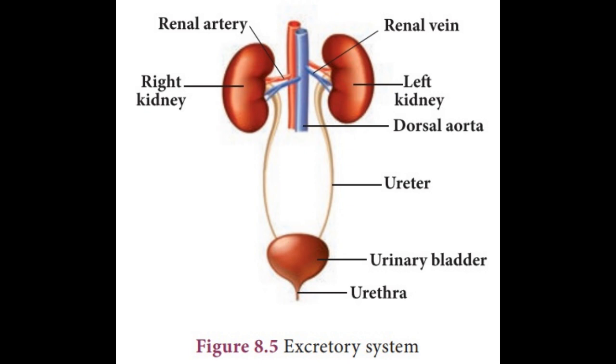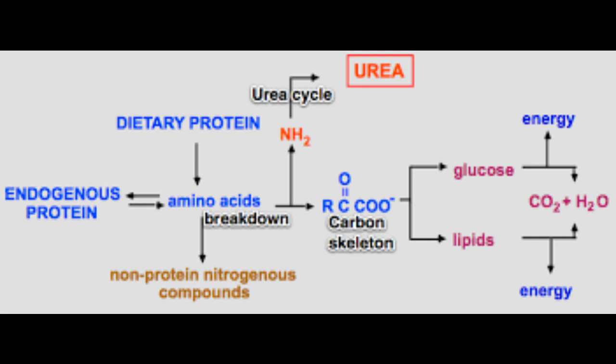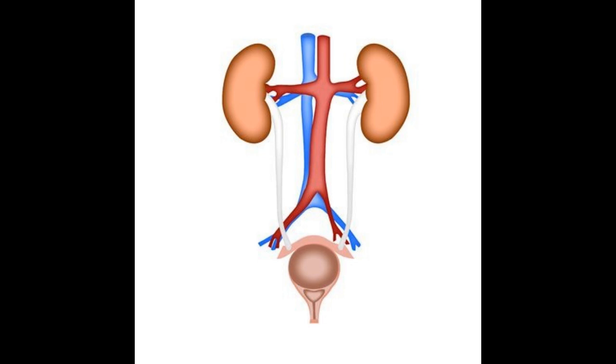The excretory system contains the organs: a pair of kidneys, a pair of ureters, urinary bladder, and urethra. Nitrogenous wastes are produced when we intake food containing proteins. These proteins are broken down and released as ammonia, urea, and uric acid. This urea and uric acid are removed by the kidneys.